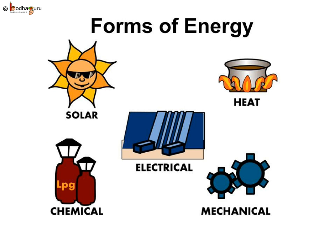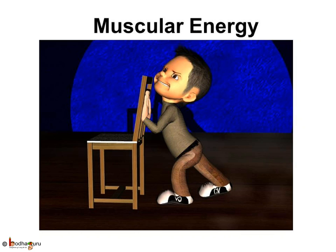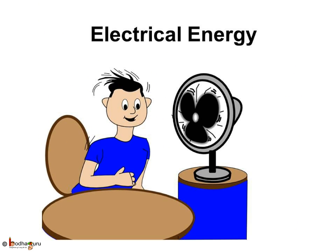There are different forms of energy — let us look at some of these. When we push or pull some object, we use force which comes from the energy of our muscles. This is called muscular energy. Electrical energy is used to operate fans, computers, machines, refrigerators, and all the electrical appliances you see in our houses, schools, offices, etc.